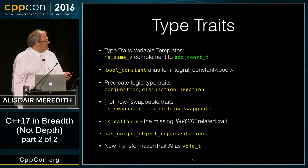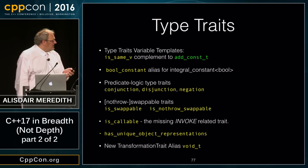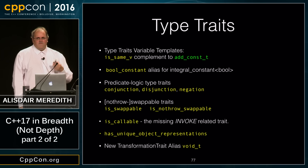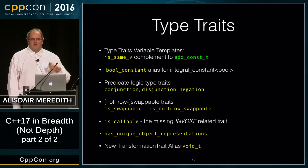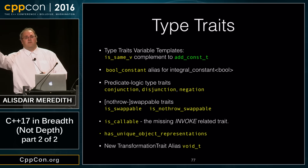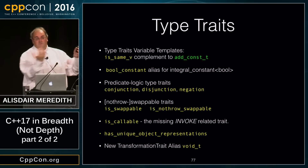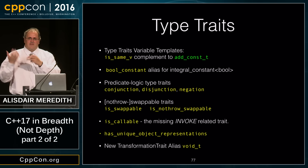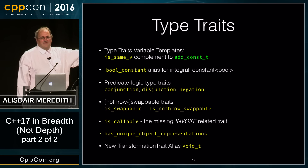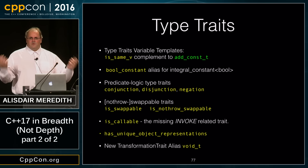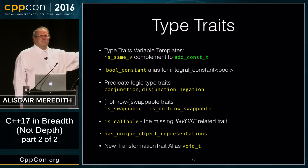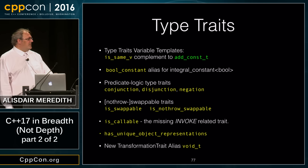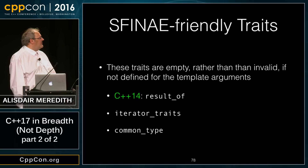Finally, void_t is a new transformation trait alias — a handy trick for compile-time introspection, asking whether an object has a particular member and creating an SFINAE constraint around that. If that description makes sense to you, go look it up — it's fantastic. If it doesn't, you don't need it; it solves an awkward syntax problem in library code.